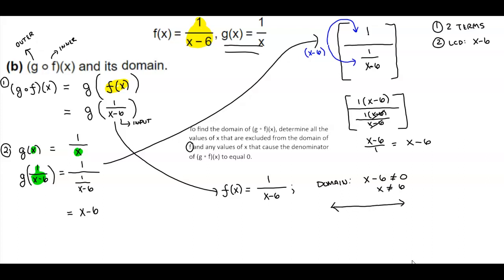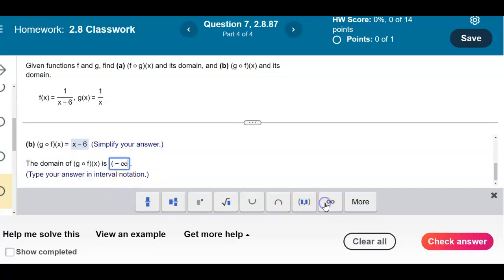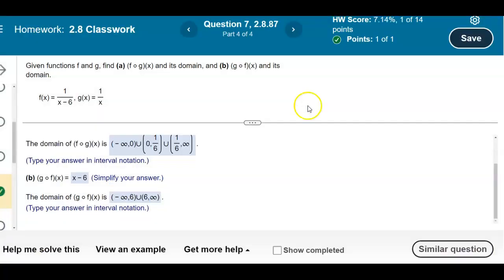Solving x minus 6 cannot equal 0 gives x cannot equal positive 6. On the number line going from negative infinity to positive infinity, we exclude 6. The domain is negative infinity to 6 union 6 to positive infinity, written as (-∞, 6) ∪ (6, ∞). And there is our result.